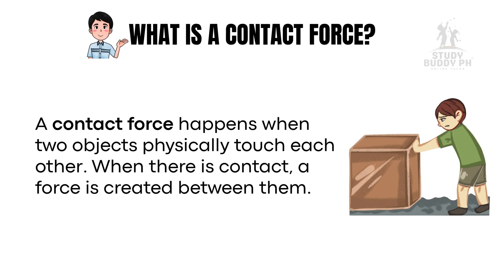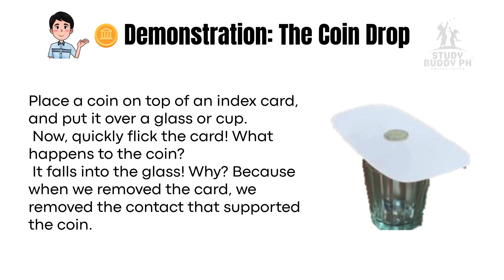A contact force happens when two objects physically touch each other. When there is contact, a force is created between them. Let's try this: place a coin on top of an index card and put it over a glass or cup. Now quickly flick the card. What happens to the coin? It falls into the glass. Why? Because when we remove the card, we remove the contact that supported the coin. This simple trick shows how contact forces work — the card was supporting the coin through physical contact.